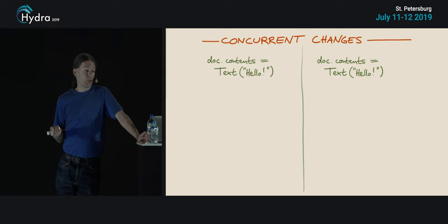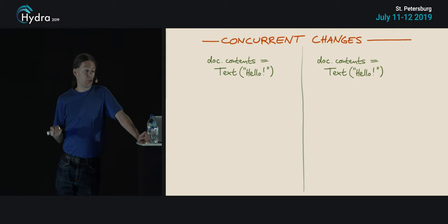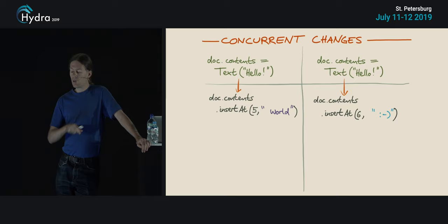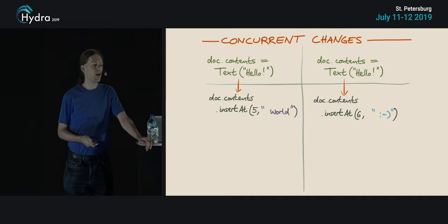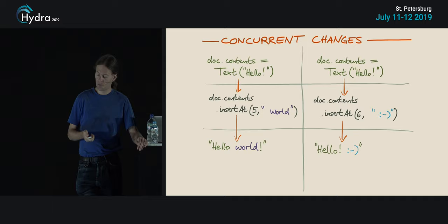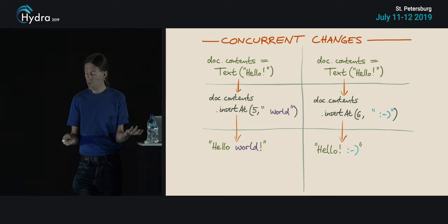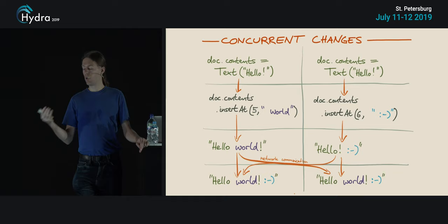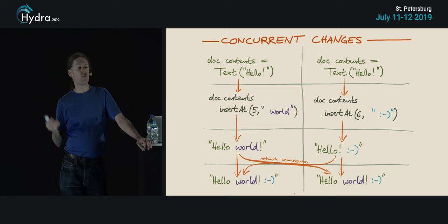Another example is text editing — the 'hello' example from earlier where on the left someone inserts the word 'world' and on the right someone inserts a smiley face. We call an insert-at method to insert text at a particular position in the document. We end up with two divergent versions of the state, and as communication happens we want to merge them into a consistent state. In a minute I'll show algorithms that achieve exactly this kind of merging behavior.